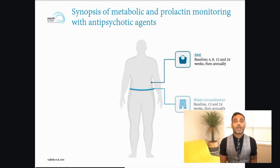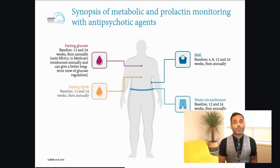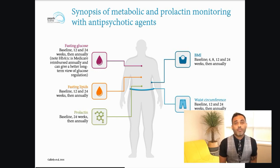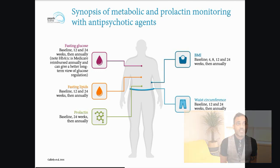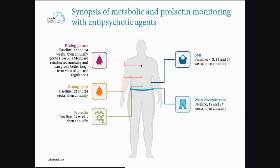The next important aspect is to look at metabolic function. When we look at the range of guidelines, there are a number of parameters to take into account. The main parameters include fasting glucose — monitored at baseline, 12 to 24 weeks, and then annually — fasting lipids, prolactin (mentioned in some guidelines), and BMI and waist circumference. Waist circumference is an important proxy for metabolic dysfunction. Blood pressure is another parameter to monitor very closely.